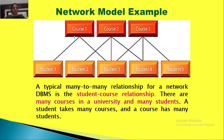Student 1 and Student 3 are enrolled in Course 1; Student 2 and Student 4 are enrolled in Course 2; and Student 3 and Student 5 are enrolled in Course 3. This demonstrates the many-to-many relationships typical of a network DBMS: many courses exist in the university and there are many students. A student can take many courses and a course can also have many students.